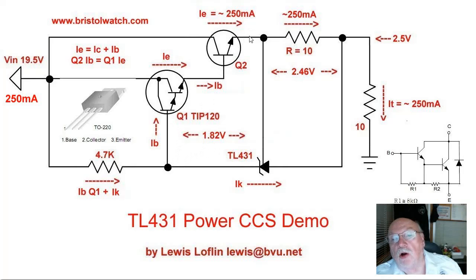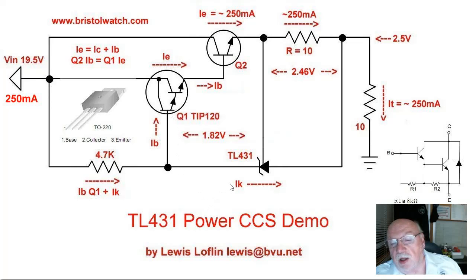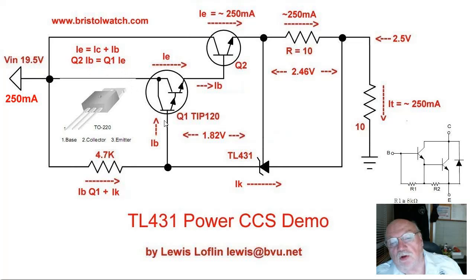Let's look at our current flow to understand this circuit. Starting with the 4.7K resistor that goes back to the source — this supplies the base current for Q1, but it also provides the cathode current for the TL431. The base current controls the conduction of Q1, so the collector current plus the base current becomes IE.